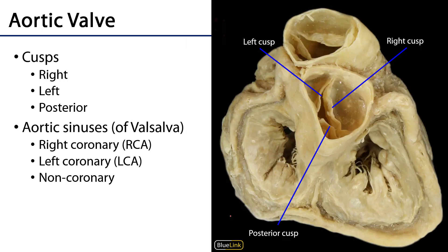Now that aortic valve has three cusps to it: a right, a left, and a posterior cusp, sometimes called the non-coronary cusp. Each of these cusps are going to separate the left ventricle from the root of the aorta, and the spaces above these cusps are known as the aortic sinuses or the sinuses of Valsalva.